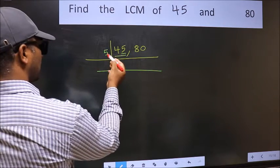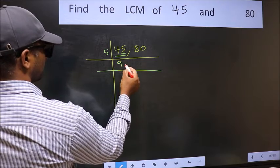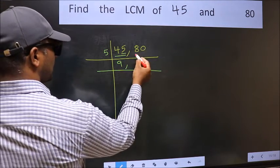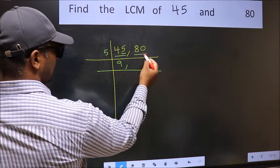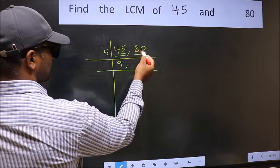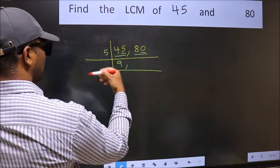When do we get 45 in the 5-table? 5 nines are 45. The other number, 80, has last digit 0, so this number is also divisible by 5.